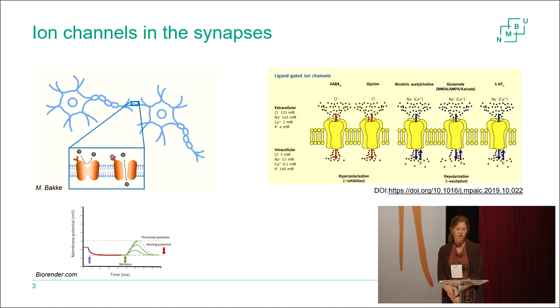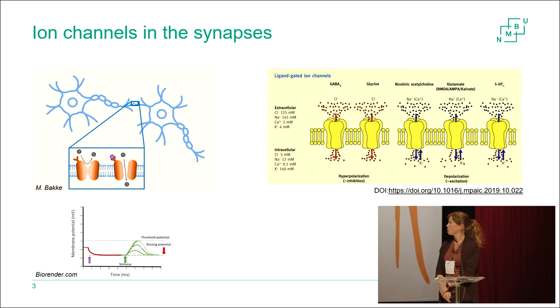The transduction and modification of signals from one nerve to another and also in the neuromuscular junction is facilitated by ligand-gated ion channels that open and close in response to binding to a ligand, either an endogenous transmitter or exogenous substances such as pesticides. They can be either negatively or positively charged ion channels.